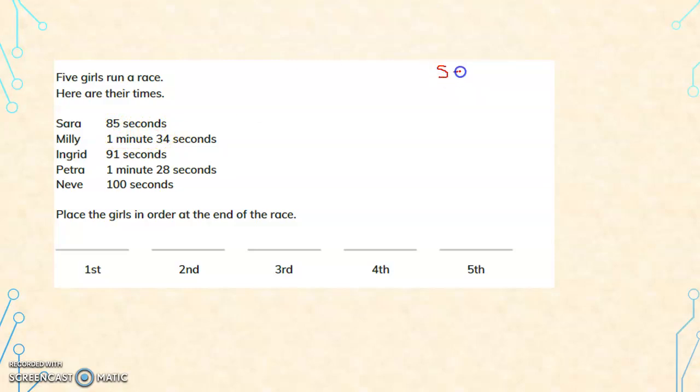Sara took 85 seconds. Now Millie took 1 minute and 34 seconds. So total seconds, how much time did Millie take? We know 1 minute is 60 seconds plus another 34 seconds. So total time taken by Millie is 0 plus 4 is 4, 6 plus 3 is 9. Total time taken by Millie is 94 seconds. Now Ingrid took 91 seconds. Petra took 1 minute and 28 seconds. 1 minute is 60 seconds, 60 plus 28. 0 plus 8 is 8, 6 plus 2 is 8. And Neve took 100 seconds.